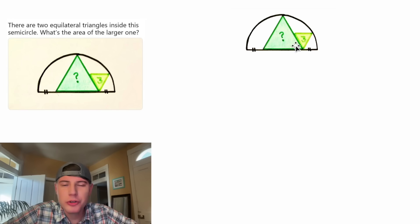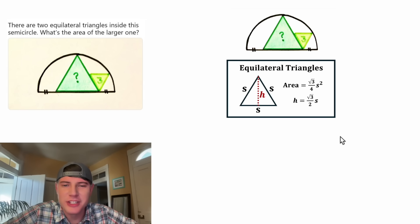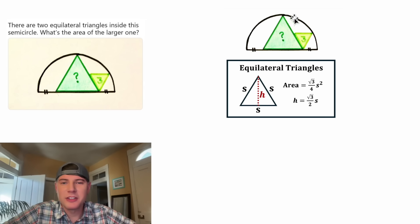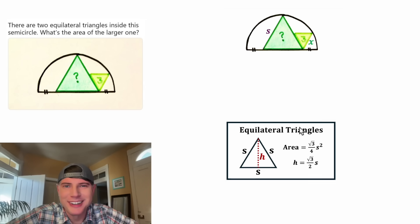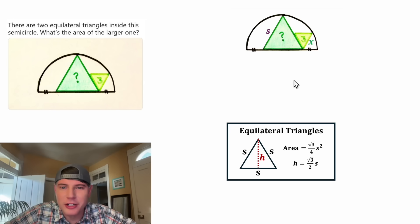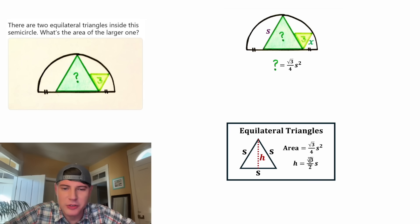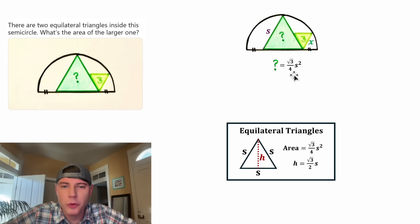Since we're given two equilateral triangles, let's use these notes for equilateral triangles. We know the area in terms of a side length, and we know the height in terms of a side length. Let's mark the side of the unknown equilateral triangle S, and then let's mark the side of the smaller equilateral triangle X. We can focus on the larger triangle and write a formula for our question mark — it's equal to the area of this triangle, so the question mark equals root three over four S squared.